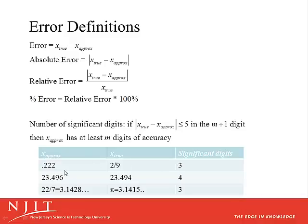We don't count leading zeros in our count of significant digits. In the second case, we see that four of the digits are correct, and so we could say that there are four significant digits of accuracy. If we are approximating pi by 22/7, which is 3.1428..., the true value of pi is 3.1415..., so we see that we have three digits of accuracy.